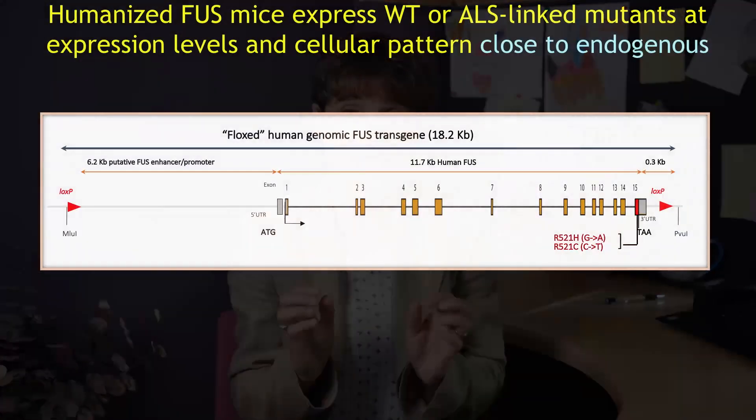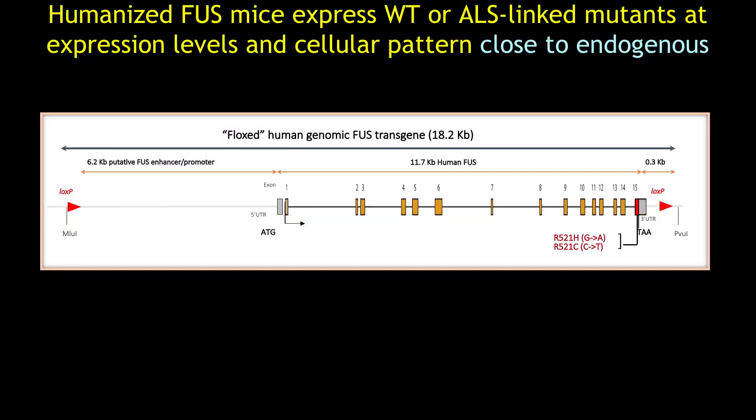FUS aggregation is also a hallmark of other neurodegenerative disorders, including forms of frontotemporal dementia, or FTD, which is actually the second most common form of dementia after Alzheimer's disease. We created a humanized mouse model by replacing endogenous FUS with the human FUS gene, either wild-type or two ALS-linked mutations, and we found that these mutant FUS mice recapitulated aspects of ALS and FTD diseases.